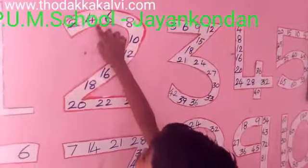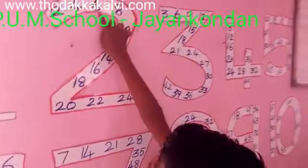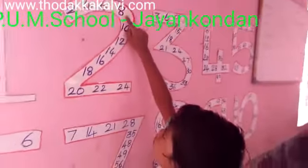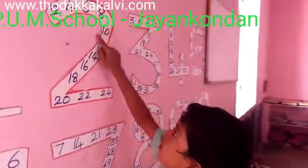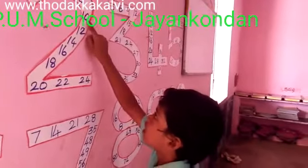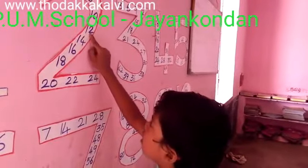1, 2 is 2. 2's are 4. 3, 2's are 6. 4, 2's are 8. 5, 2's are 3. 6, 2's are 12.